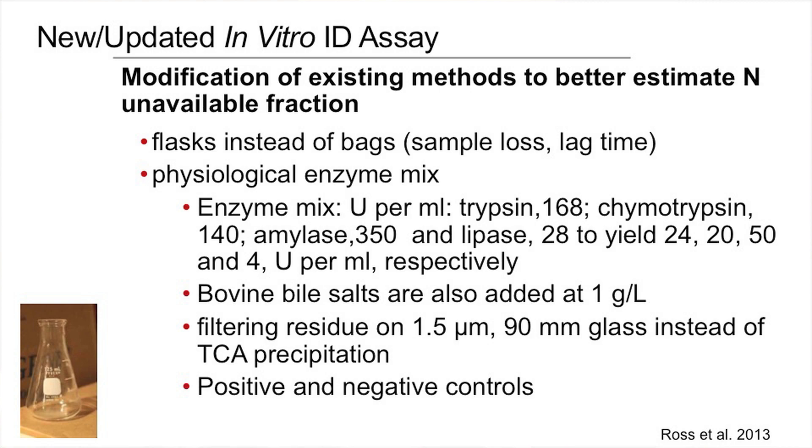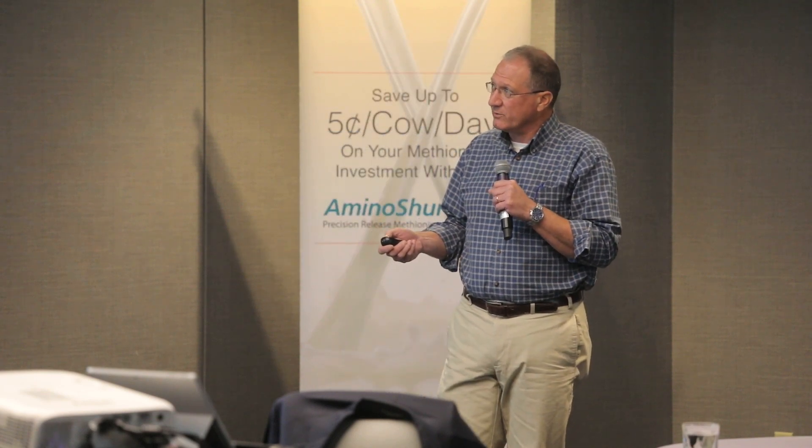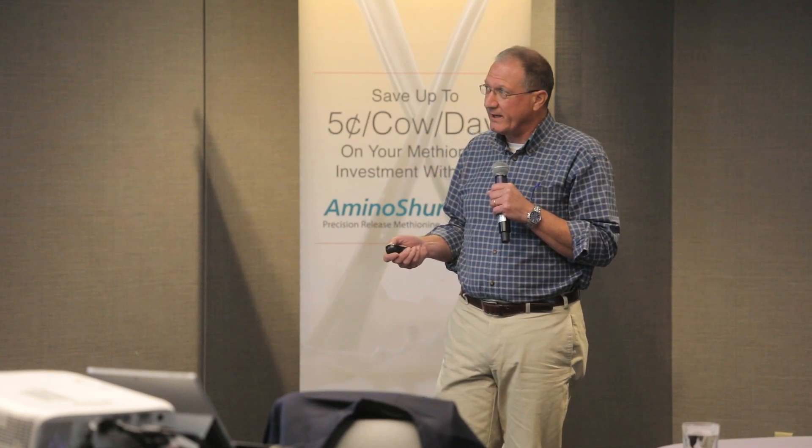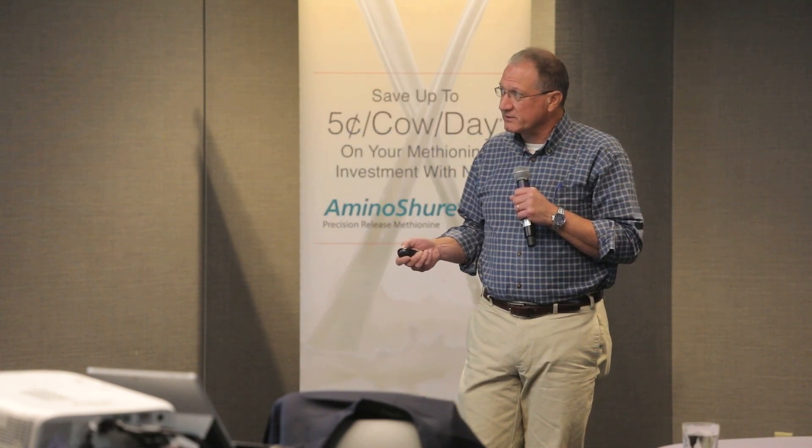Through all of this, there have been assays out there for years: three-step, modified three-step, Tilley-Terry, you name it. We ran a bunch of those and found some things we didn't like. So we went back, spent five years playing around with an assay. No bags, different enzyme mix, no pancreatin because it didn't have any trypsin activity, some bile salts to get some emulsification, filter on a glass filter. We've thought about going back to TCA precipitation for some of the soluble proteins, and we always have positive and negative controls.